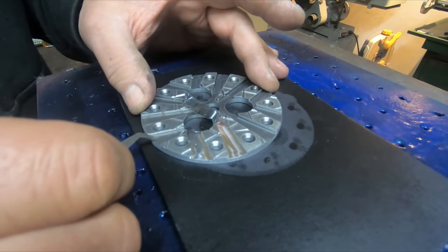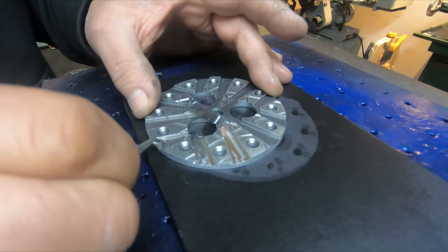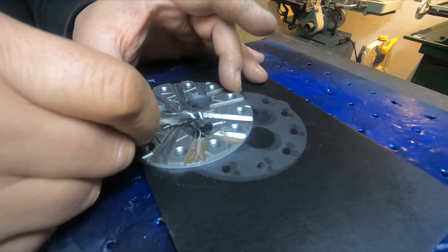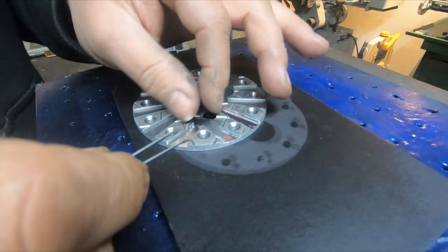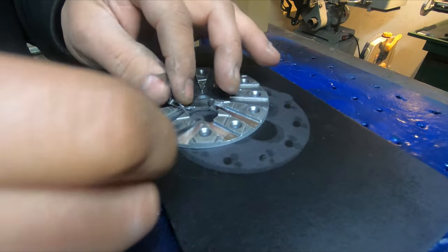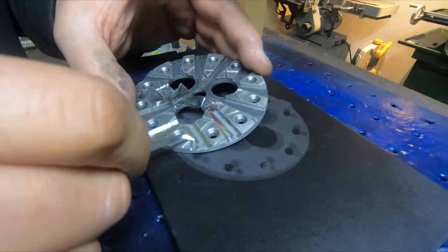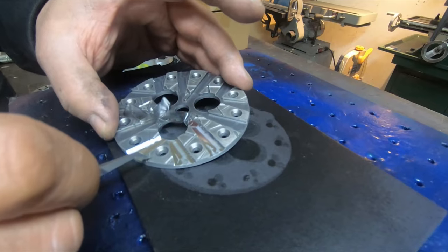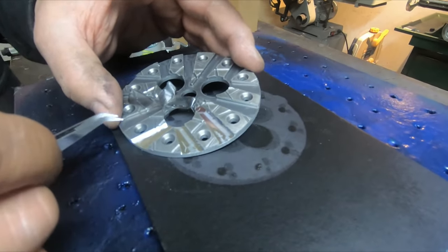So basically now these areas here are perfectly masked, so now I can go ahead and apply primer to this area. With the coating on here, the paint won't go on to this part.